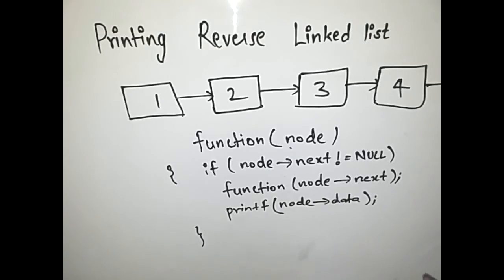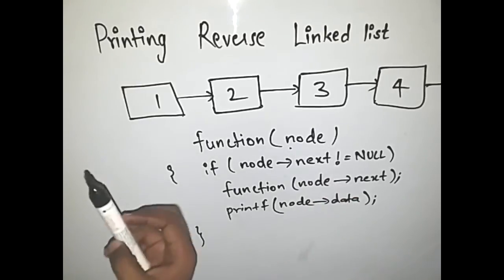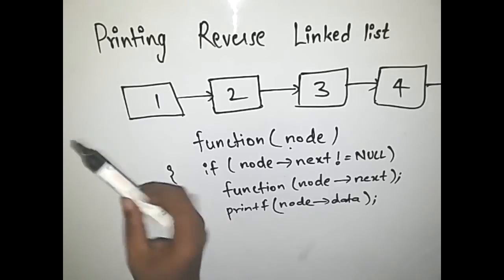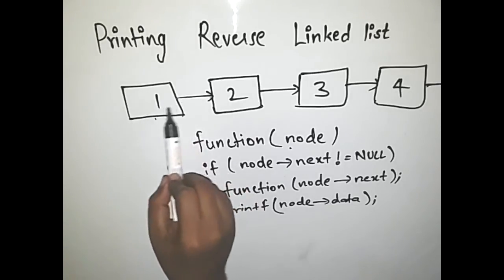Let me explain how this function works. It takes node as an argument. Node is a pointer pointing to a node and obviously the node has a data and a next pointer pointing to the next node.